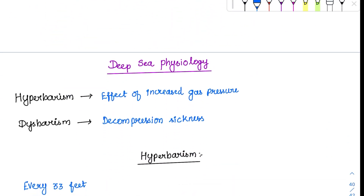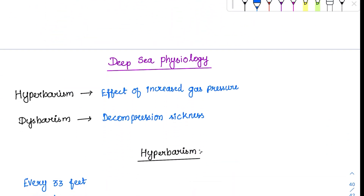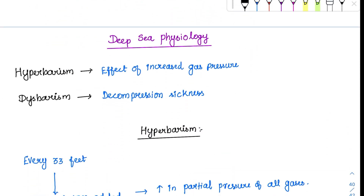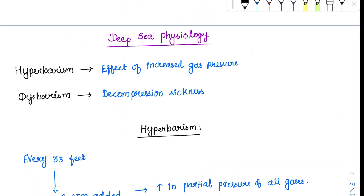Now coming to the last topic in case of respiratory disorders, which is deep sea physiology. We have covered high altitude physiology; the reverse happens in deep sea physiology. At high altitude, whenever you ascend, the barometric pressure drops. But whenever you go down, the barometric pressure increases.